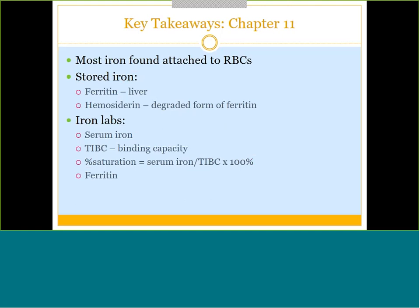Chapter 11 focused on the iron inside hemoglobin. The majority of our body's iron is attached to hemoglobin in our red cells. We also have stored iron — anytime we don't have a need for iron, we put it away. We can store it as the protein ferritin, mainly in the liver, or as hemosiderin, a degraded form of ferritin. If we suspect someone is low in iron, we can measure their serum iron, iron binding capacity, percent saturation, and ferritin stored iron levels to get an overall picture of their iron health.